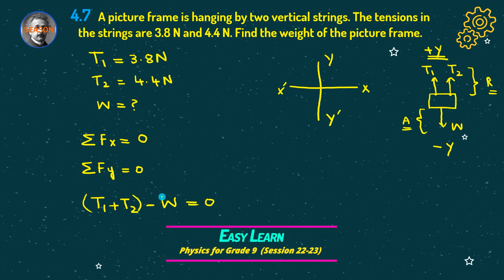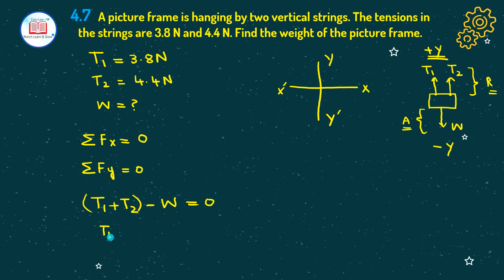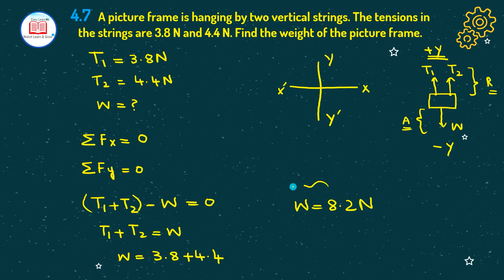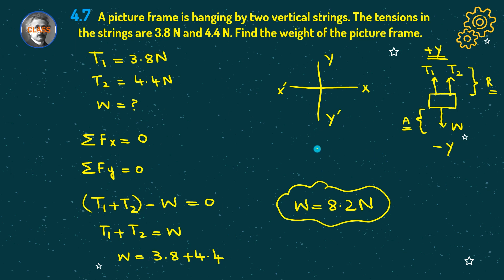We need to find W, so rearranging gives T1 plus T2 equals W. Substituting the values: 3.8 plus 4.4, so W equals 8.2 newton. The important thing in this question is to be aware of which forces act along positive axes and which along negative axes. This was our seventh problem solved.